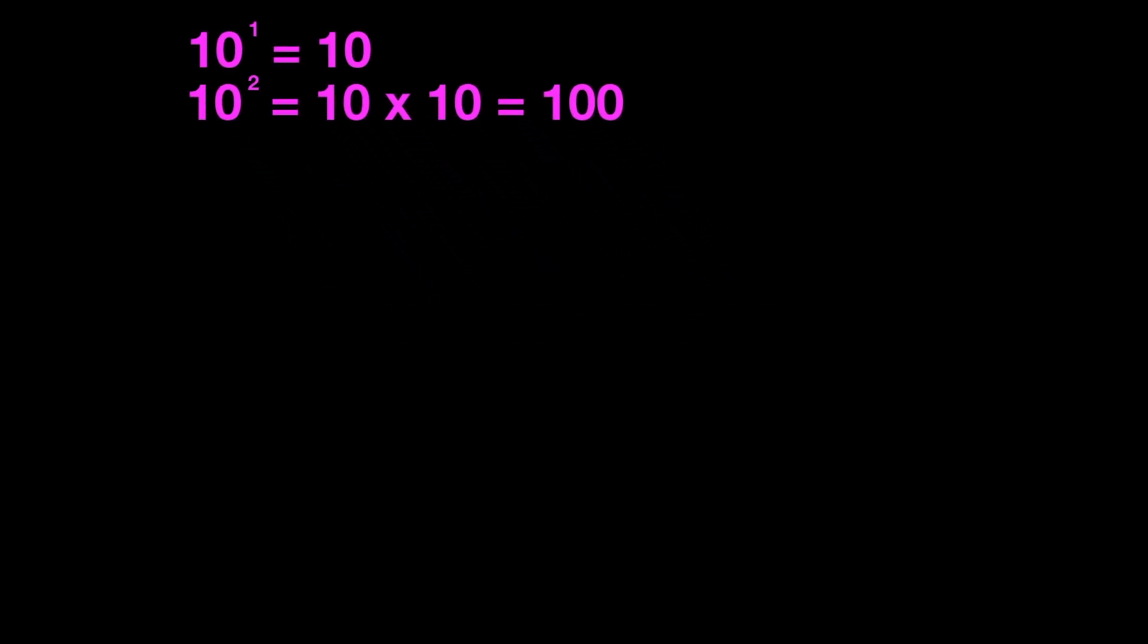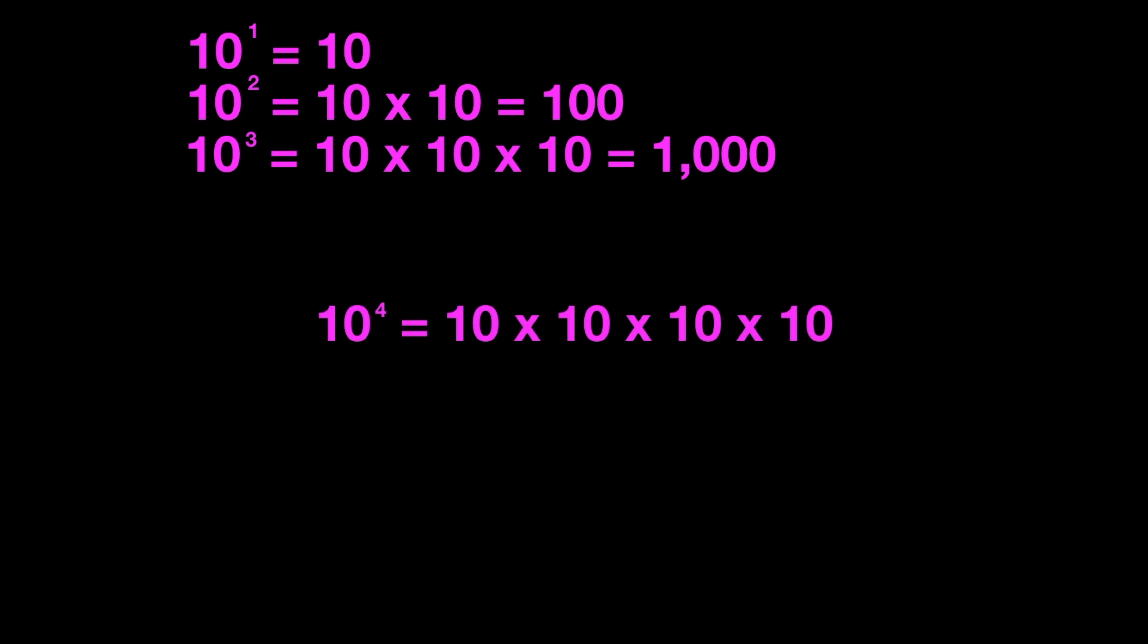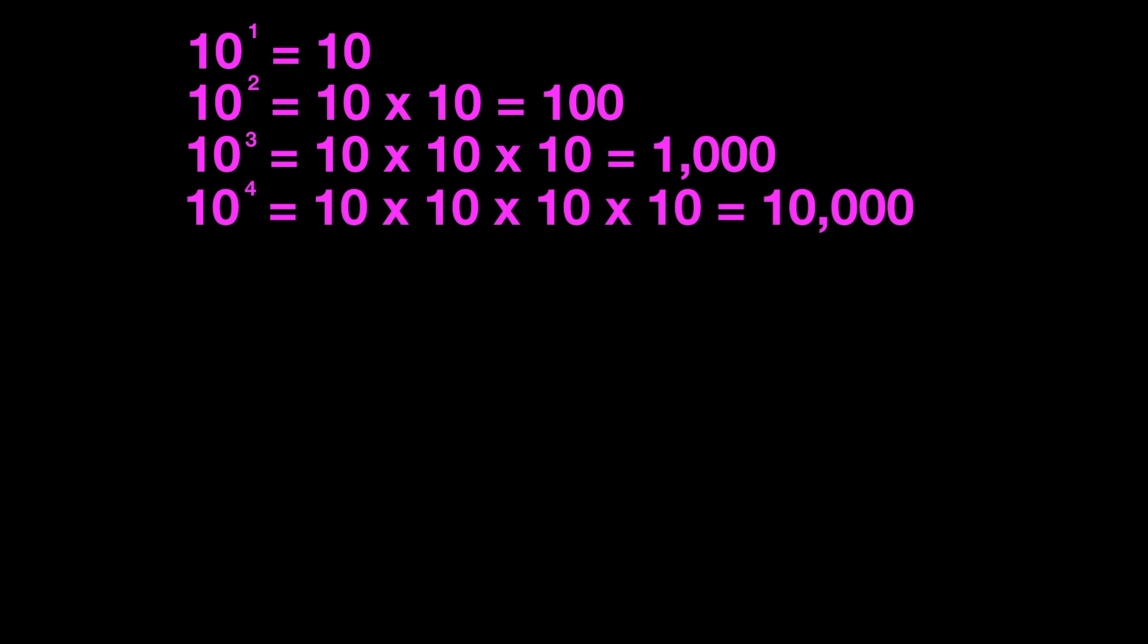10 to the third power, or 10 to the power of 3, is 10 times 10 times 10. That's just the same thing as 1,000. 10 to the fourth power is 10 times 10 times 10 times 10, or 10,000. 10 to the fifth power would be 100,000.